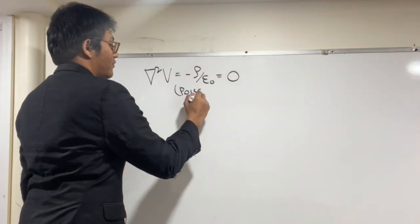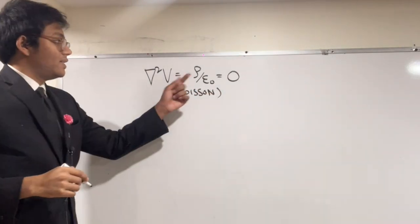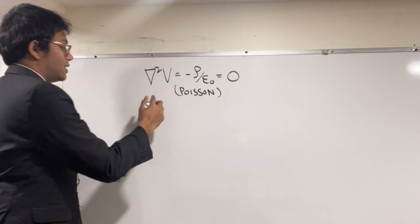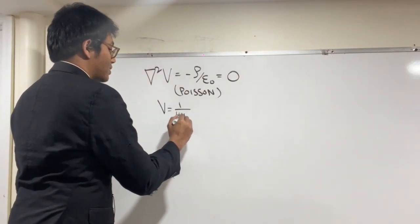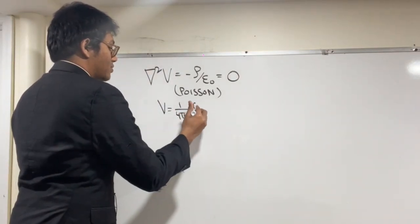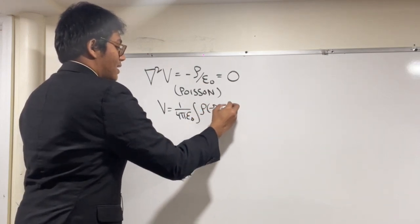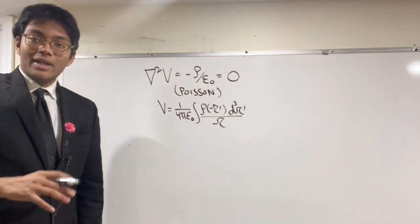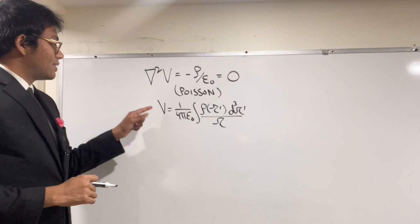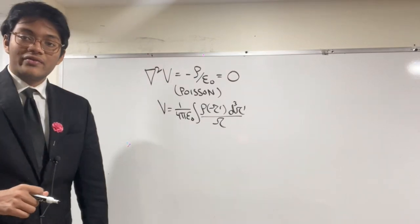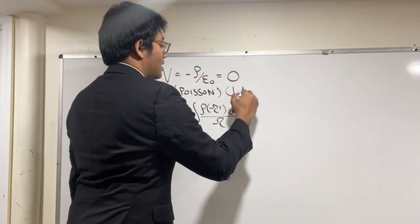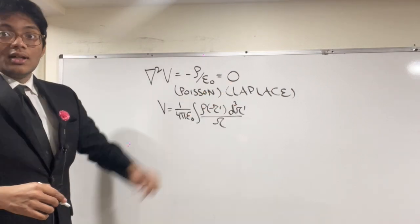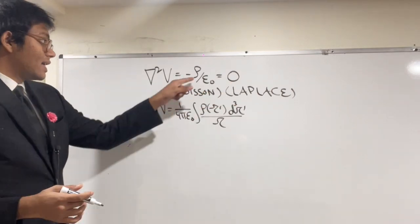Recall that we solved Poisson's equation for the electric potential and got V equals 1 over 4π ε₀ times the integral of the volume charge density times d r-prime cubed over r. This was generally the formula for electrostatic potential derived by solving Poisson's equation for V. Now what we're trying to do is solve Laplace's equation for V.